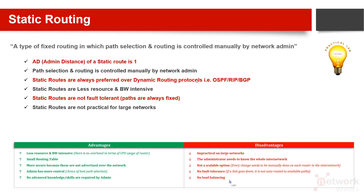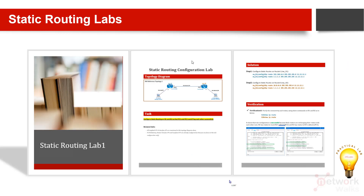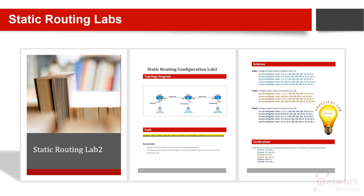I have prepared two labs for static routing. In lab number one, the task is to configure static routing between two routers and ping from computer A to computer B. If the ping is successful, the configuration is correct. You can simulate this in Cisco Packet Tracer or GNS3 — Cisco Packet Tracer is better especially if you are at CCNA level. The lab provides a step-by-step solution: what commands to use on router one, router two, and then final verification.